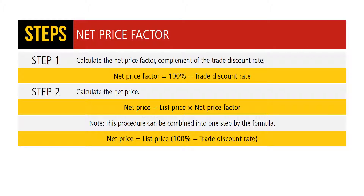There are two steps to calculate net price using the net price factor. Step 1: calculate the net price factor, the complement of the trade discount rate — net price factor equals 100% minus the trade discount rate. Step 2: calculate the net price — net price equals list price times the net price factor. Note this procedure can be combined into a simple one-step formula: net price equals list price times (100% minus trade discount rate).